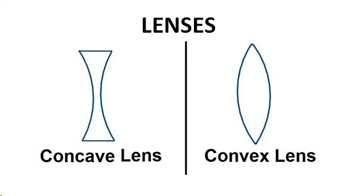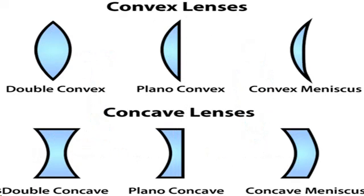Converging lens or convex, which is thicker at the middle than at the edge. There are three types of converging lenses: double convex, plano convex, and converging meniscus.